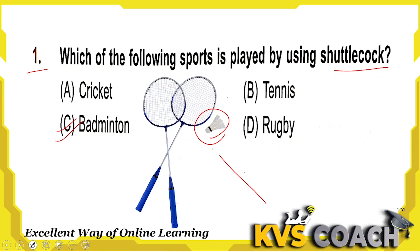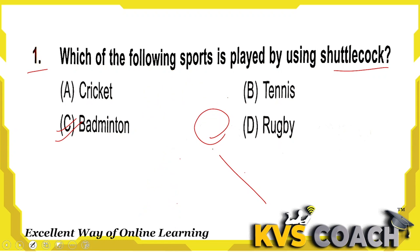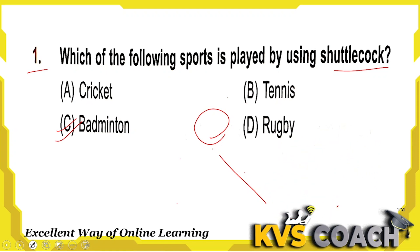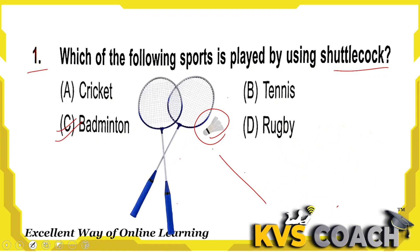Option D is rugby, and for rugby we use this type of ball. So the right answer for the question is badminton — for badminton we use shuttlecock. Option C is the right answer.